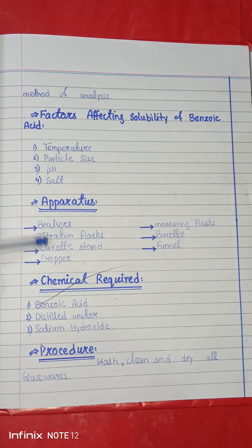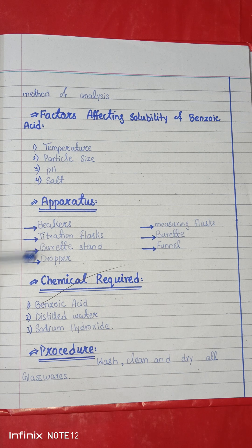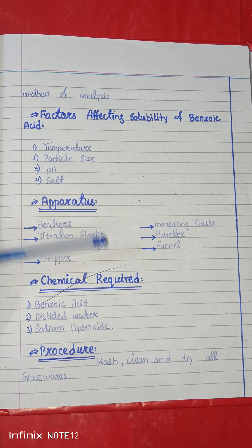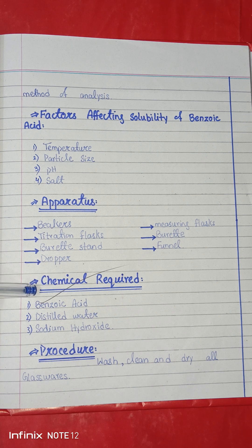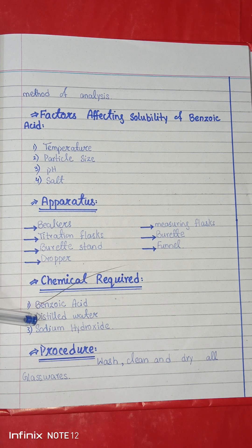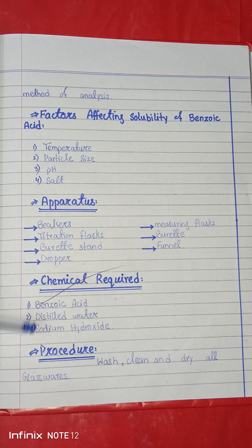The apparatus you will need for this experiment includes a beaker, conical flask, burette, burette stand, funnel, and measuring flask. The chemicals required are benzoic acid, distilled water, and sodium hydroxide (NaOH).